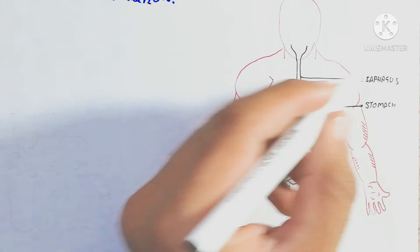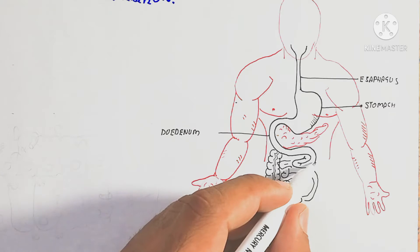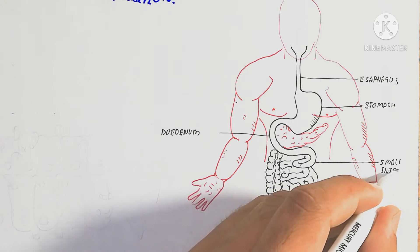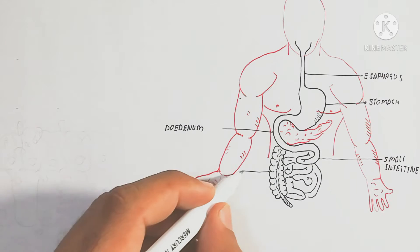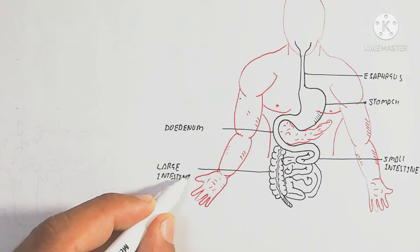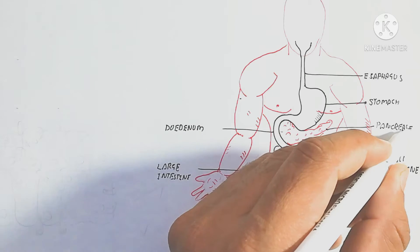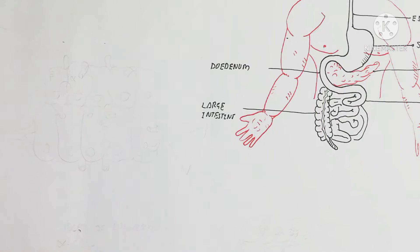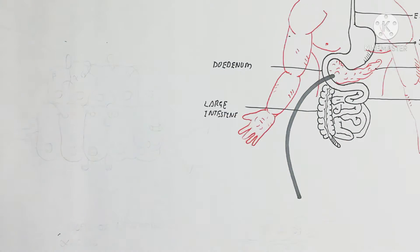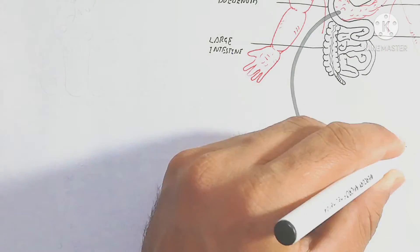We will not discuss the full digestive system here; we just need to understand where the pancreas is present. The pancreas lies on the left side of the duodenum and has a glandular structure with a yellowish color. It produces different hormones — exocrine hormones, which release into the duodenum, and endocrine hormones, which release into the blood.